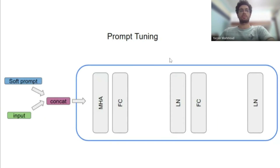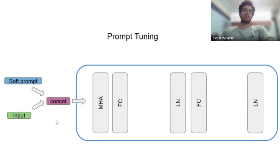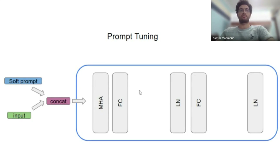The other famous technique is prompt tuning. In prompt tuning, you also freeze the entire model, but instead of adding adapter layers, you either prefix or append the input with a soft prompt — learnable free vectors or tokens. These are the only trainable parameters in your entire pipeline; everything else is frozen. These two are the most prominent techniques for parameter-efficient fine-tuning.